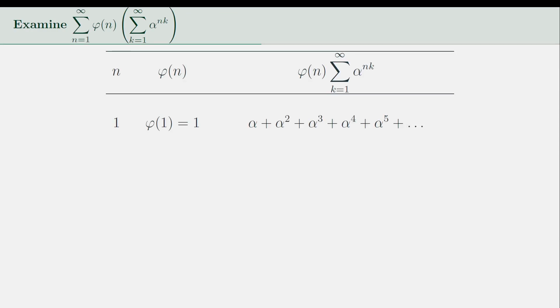For n equals 1, we have the totient of 1 equal to 1 and the infinite geometric series as α plus α² plus α³ and so on. For n equals 2, the terms are α², α^4, α^6, and so on. For n equals 3, the totient of n is equal to 2, which makes the terms 2 times the sum of α³, α^6, and so on.